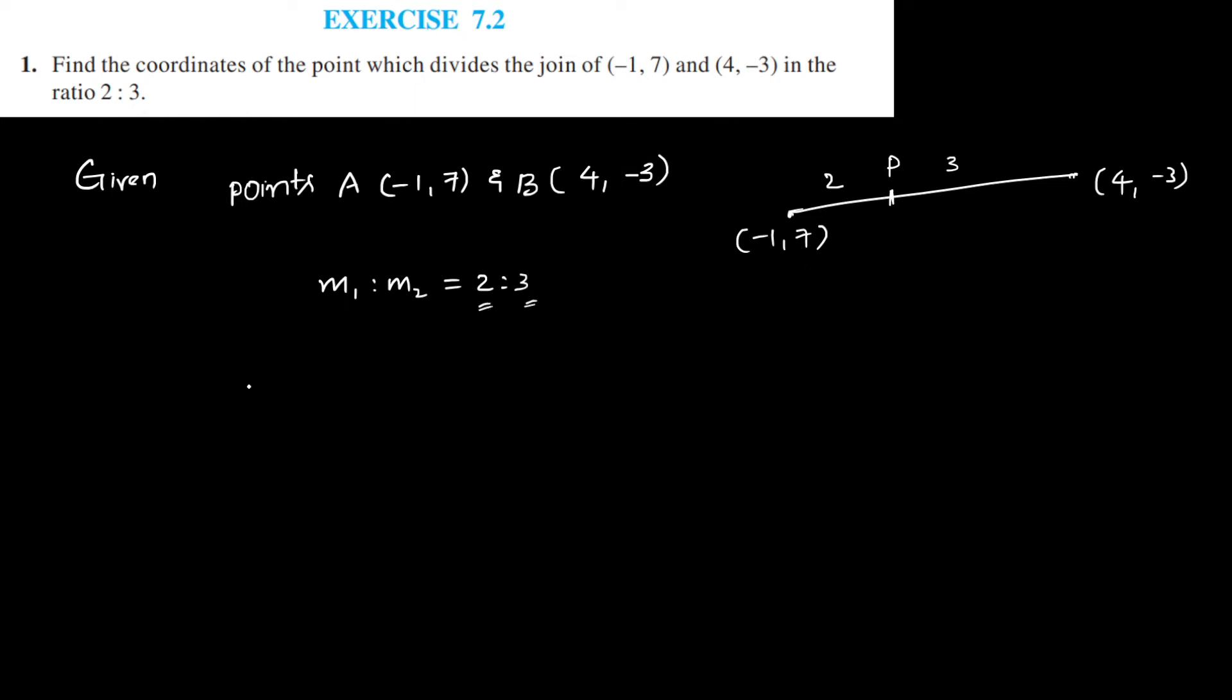Now you have to find the coordinates of P and we have the formula: M1X2 plus M2X1 by M1 plus M2 comma M1Y2 plus M2Y1 by M1 plus M2. So that means M1 can be taken as 2.